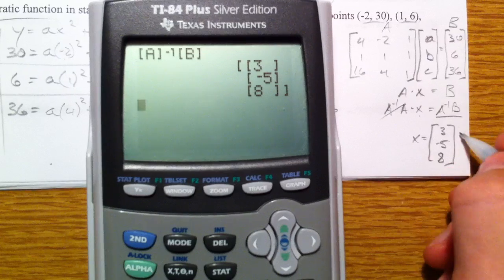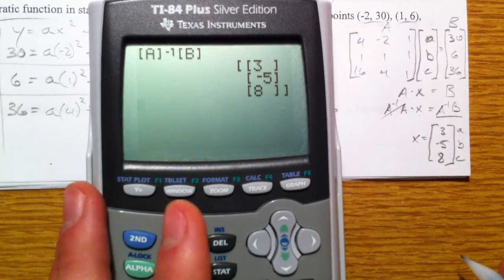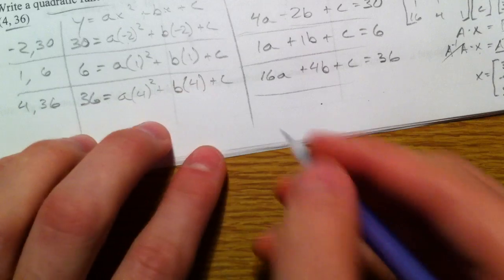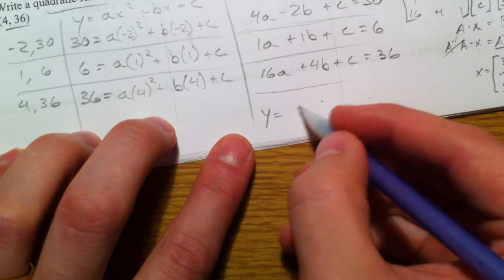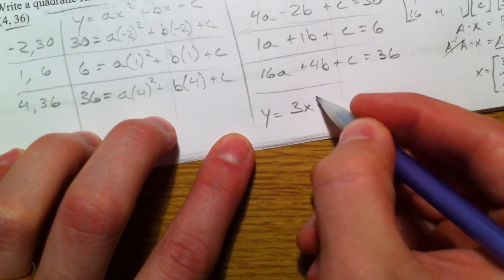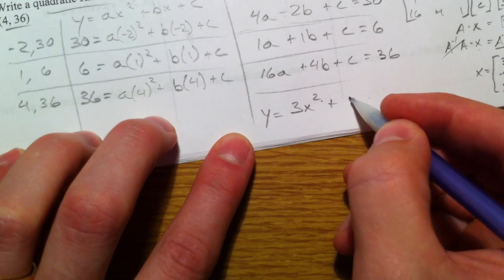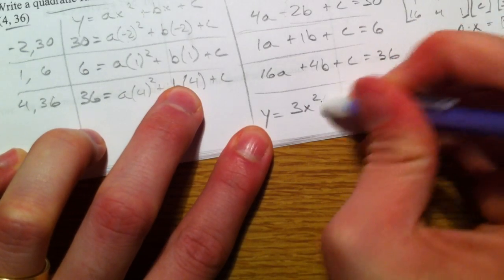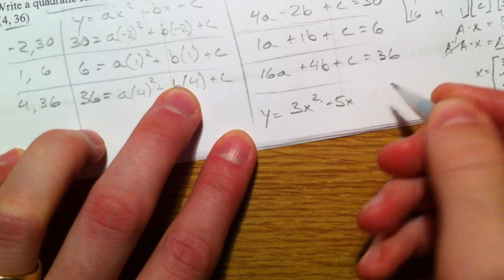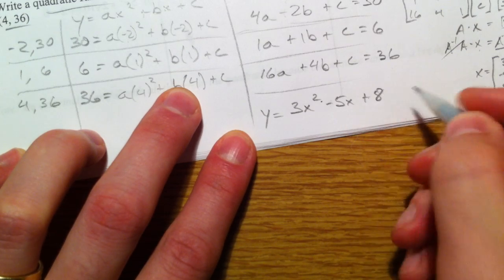So what that is, is A, B, and C. So we have our final equation, is y equals 3, as our A, x squared, plus, or you could say, minus 5, plus 8.